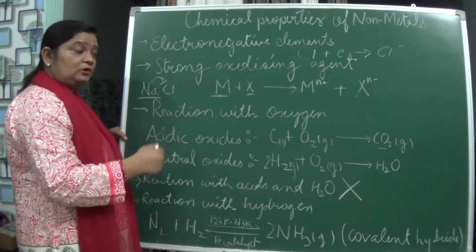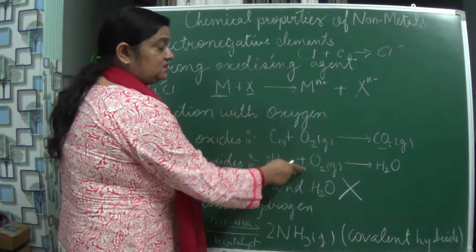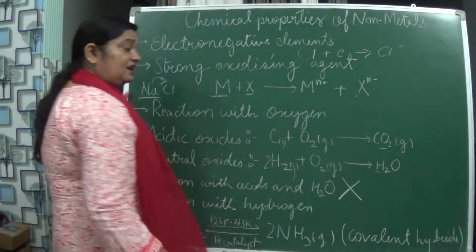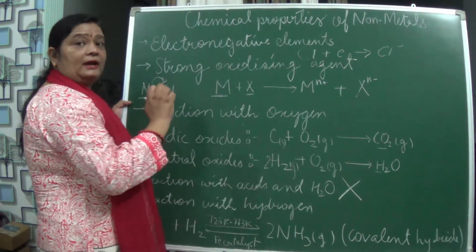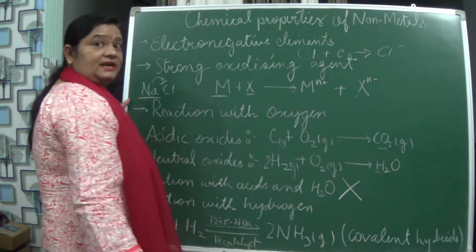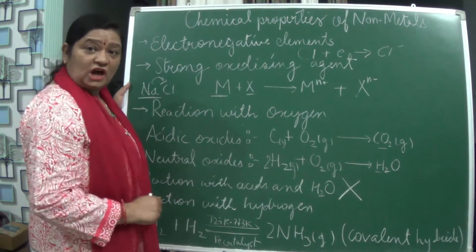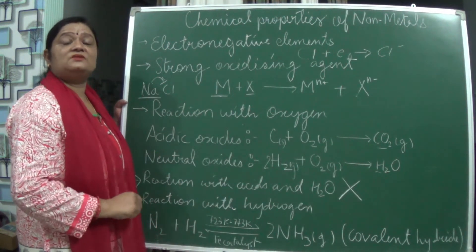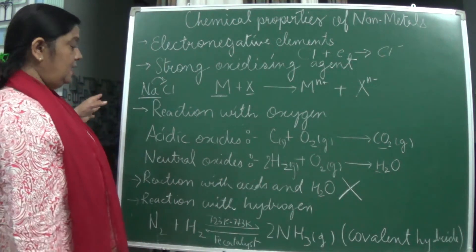When we talk about the neutral oxides, hydrogen and oxygen combine to form water. Also, if carbon reacts with oxygen and oxygen is less present, it forms carbon monoxide, and that carbon monoxide is a neutral oxide.